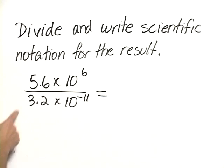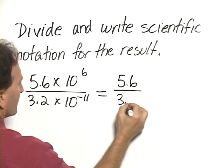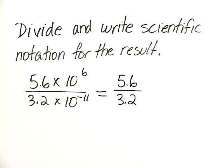So in this case, we divide the numbers that are between 1 and 10. So, 5.6 divided by 3.2.